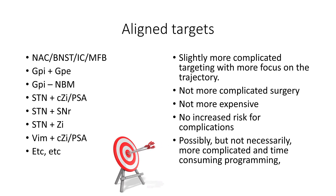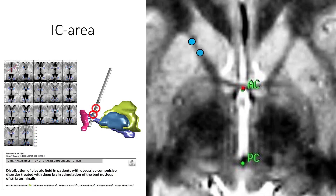The programming might become more complicated, but this is not the case for the most commonly used combinations. If we start with the area of the internal capsule in psychiatric disorders, there are several different targets. Patients with accumbens or BNST-DBS will have their highest contacts in the internal capsule, and some will also try to reach the medial forebrain bundle on its way through the internal capsule.